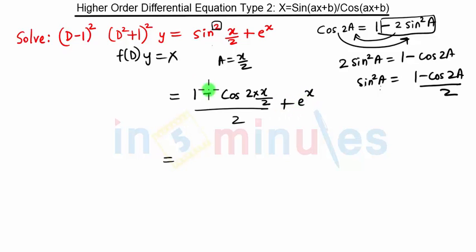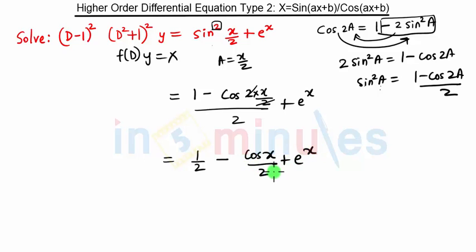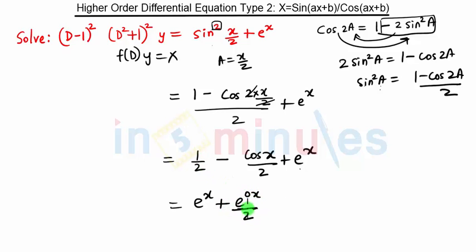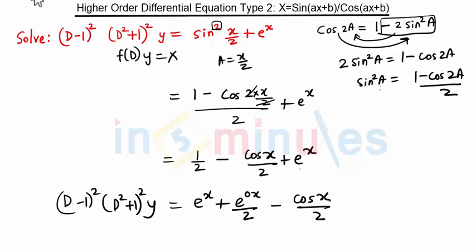This part becomes 1/2. Taking the 2 across, the 2s cancel and it becomes cos(x)/2, plus e^x. So this problem is a combination of Type 1 and Type 2: e^x belongs to Type 1, and the half we can write as e^(0·x)/2 minus cos(x)/2, while this part remains as is.